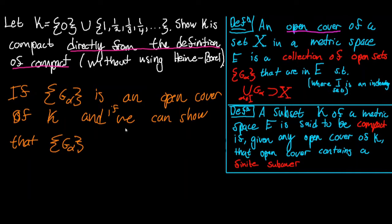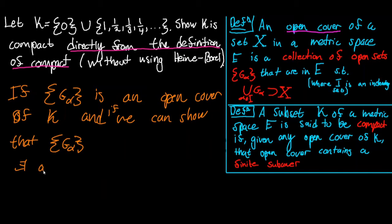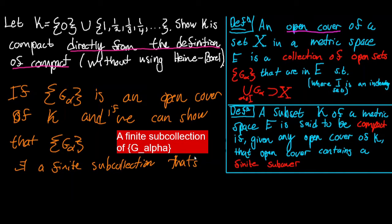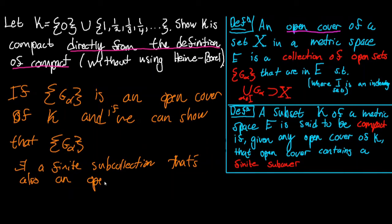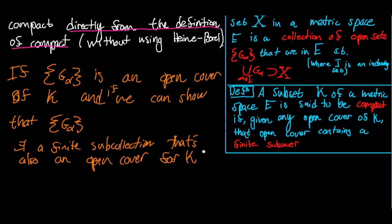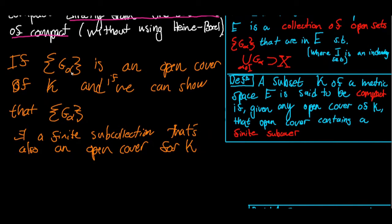If we're able to show that that collection of open sets has a finite sub-cover — that is, there exists a finite sub-collection that is also an open cover for K — then we've shown that K is compact. Because this is any open cover for K, if every open cover must contain a finite sub-cover, then K is compact.